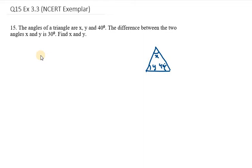We are given three angles: x, y, and 40 degrees. Writing equation 1 as x plus y plus 40 degrees equals 180 degrees, because the sum of all angles of a triangle is 180. So x plus y equals 180 minus 40, which is 140 degrees. This is equation number 1 using the angle sum property of a triangle.